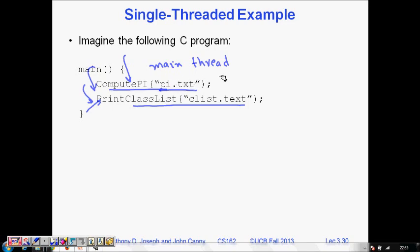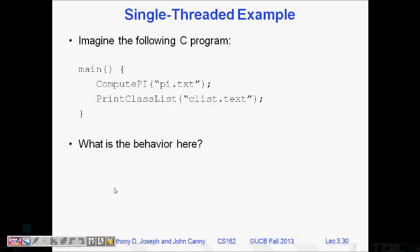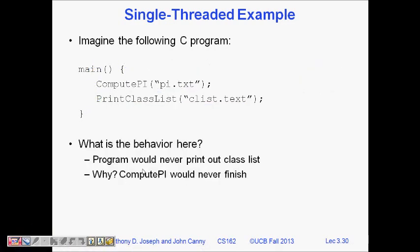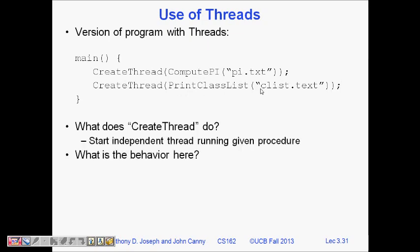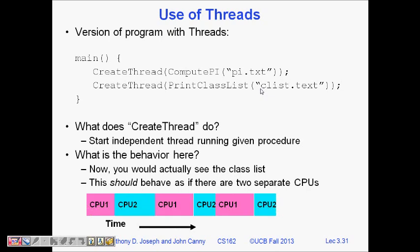But if you use two threads, the main thread will say please start this function. One person will be stuck in the infinite loop, but the print class list—another function thread T2 will have the print class list and he will execute and complete it. Compute pi will never finish, program would never print the class list if there was one thread. But if we create thread, then compute pi will be done parallelly with the print class list. This is starting independent thread running a given procedure.